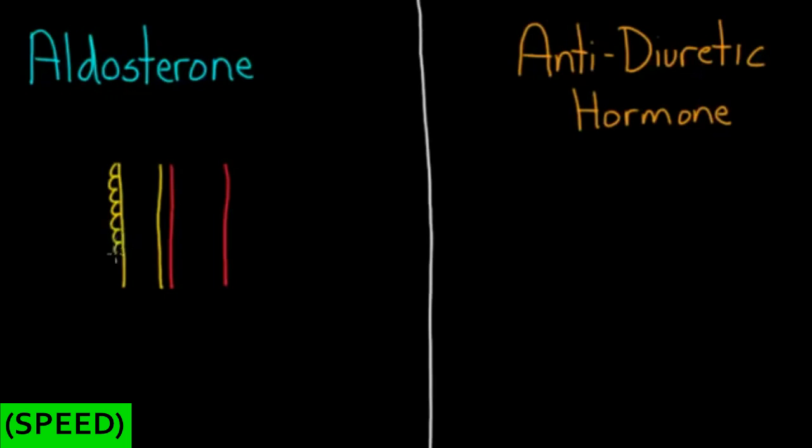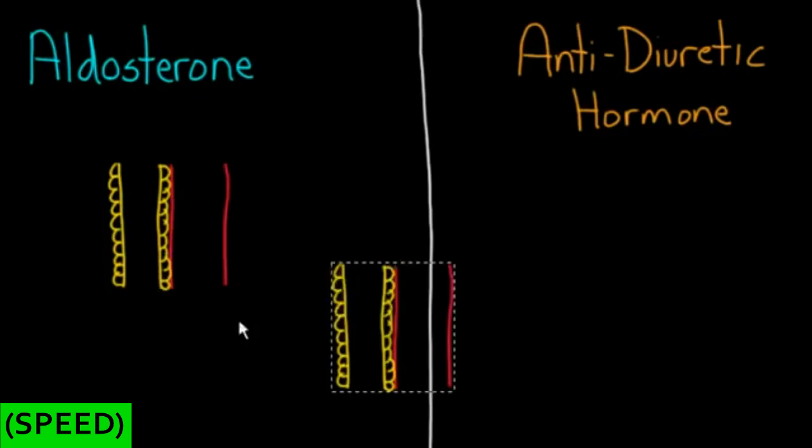So if we have a little nephron here, a little tubule, and these are the cells lining the tubule and eventually send the urine on its way out. And next to it, I have a little blood vessel. And just to save myself from drawing it twice, I'm going to just cut and paste this over to this side right here.